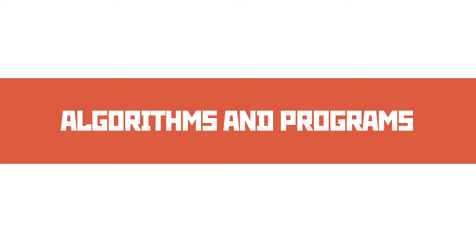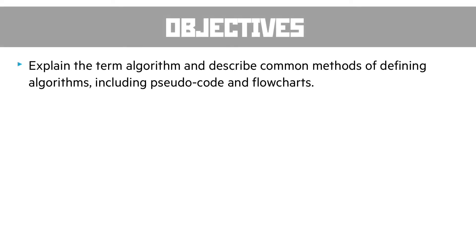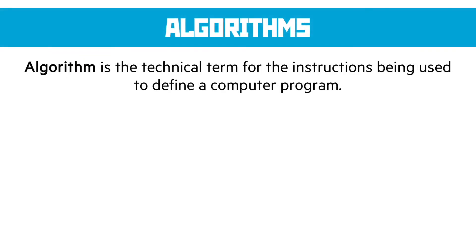Algorithms and programs, part one. Our first objective is to explain the term algorithm and describe common methods of defining algorithms including pseudocode and flowcharts. An algorithm is just a technical term for the instructions being used to define the computer program. It makes us feel very clever in computer science to use this word when all we mean is the sequence of events.